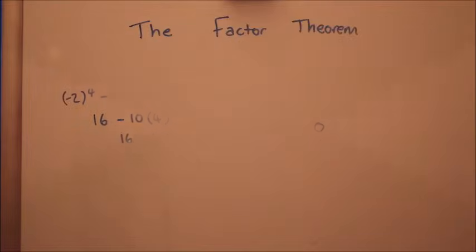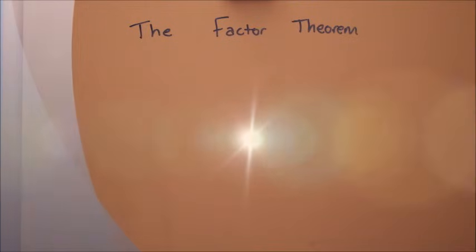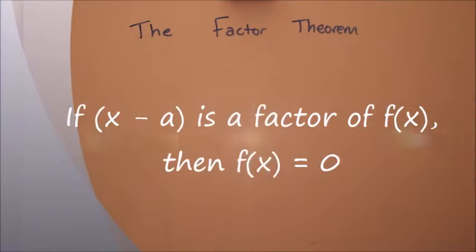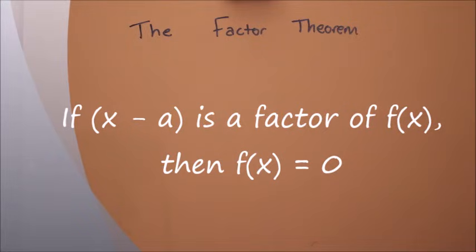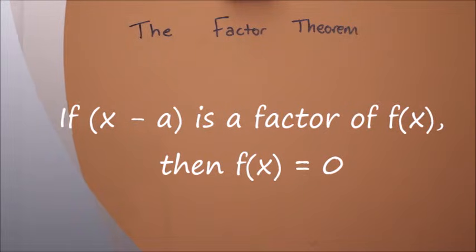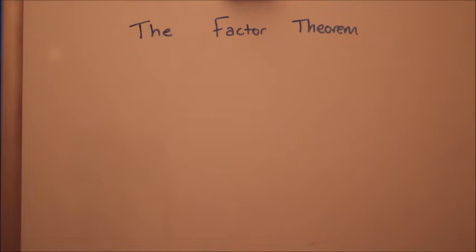As I've said before, this is a specific case of the remainder theorem. If you're dividing by a linear factor, if that is a factor, the remainder will be 0. Which is why if you put in that number, you should get 0 instead of a different number as a remainder. So let's look at three questions using the factor theorem.